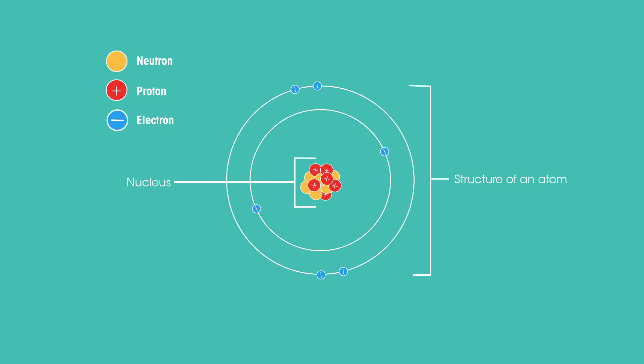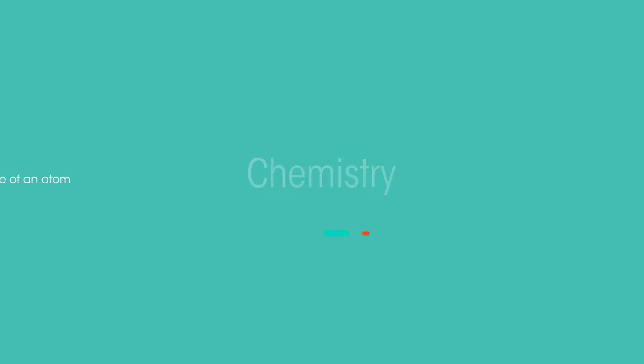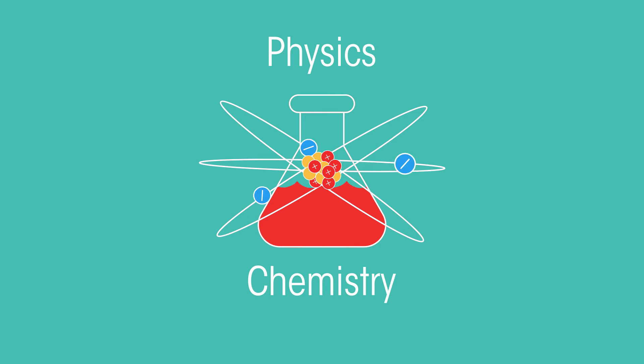In the previous video you learnt about the structure of atoms. You also learnt that elements are atoms of different types. You have probably come across atoms and elements before in chemistry. Physics and chemistry overlap, and so we need to also know about them in physics too.